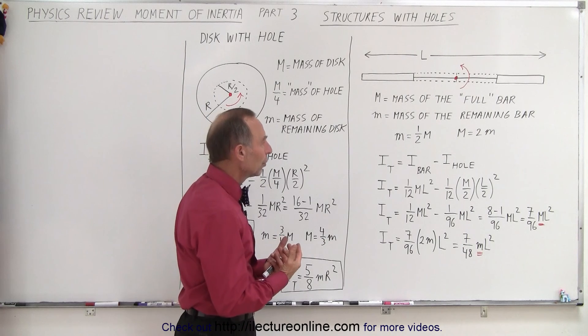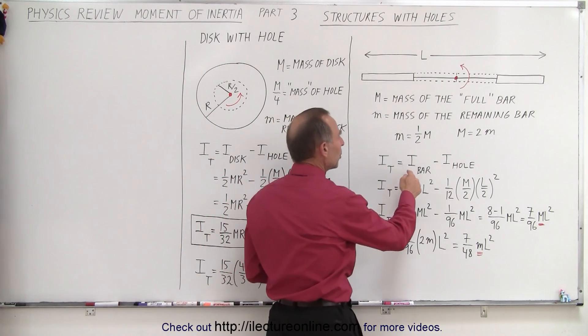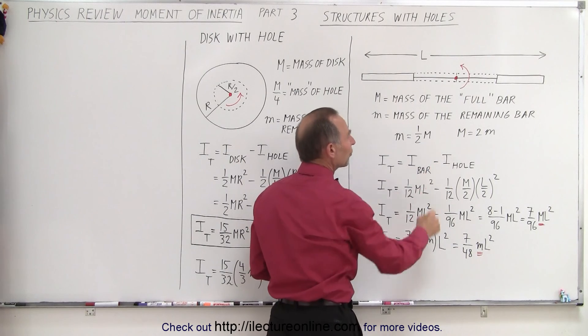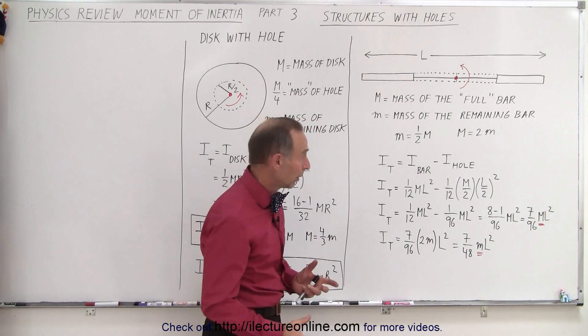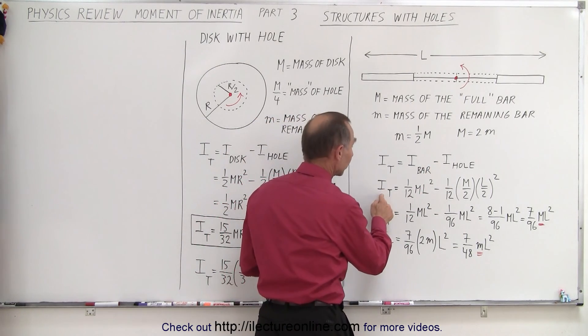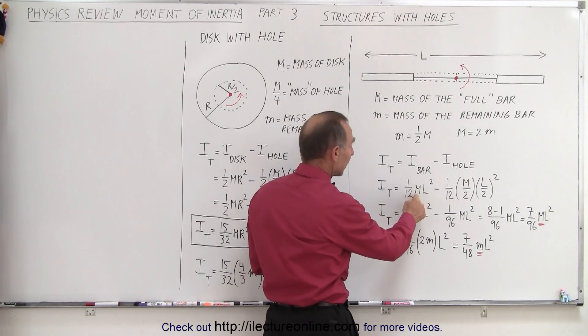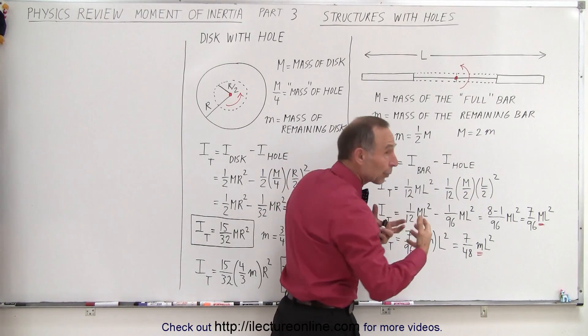So the total moment of inertia is going to be the moment of inertia of the total bar without the hole minus the moment of inertia of the hole. The moment of inertia of the total bar is simply going to be 1/12 ML squared, assuming again that M is the total mass of the bar, and that's how we're going to start.